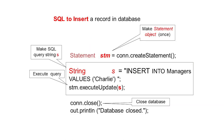After creating the connection, we also write: Statement stm = con.createStatement(); — this is for creating a statement object. Now, to run queries, we write: String s = "INSERT INTO manager VALUES ('Charlie')"; — here 'manager' is the table name, and we are inserting one value because the table may have one field. If the table has multiple fields, we write multiple values inside the INSERT INTO manager VALUES(...) statement.